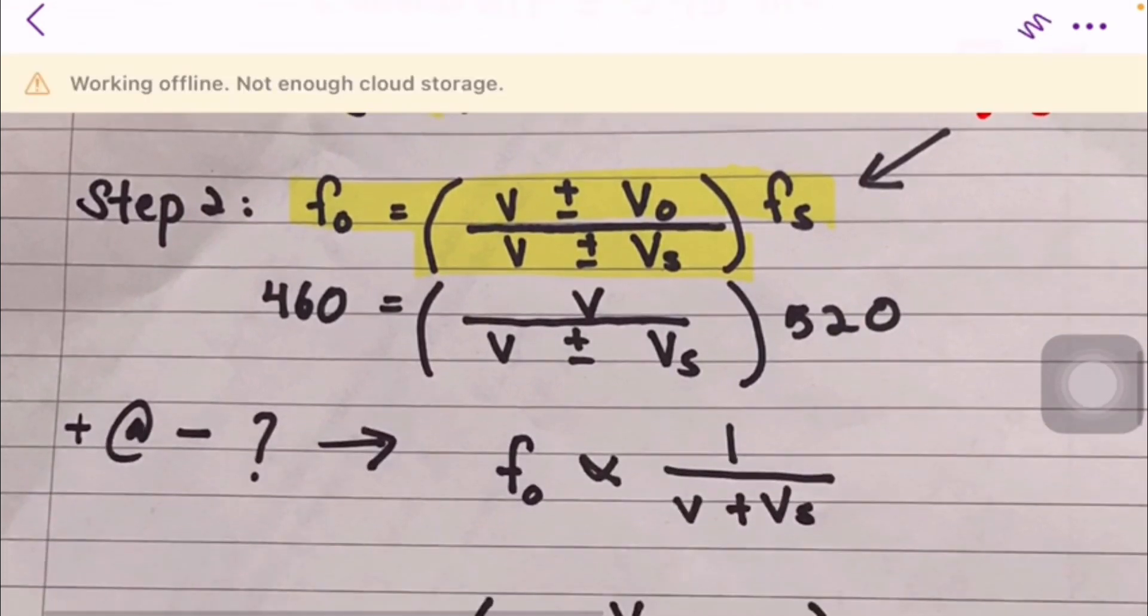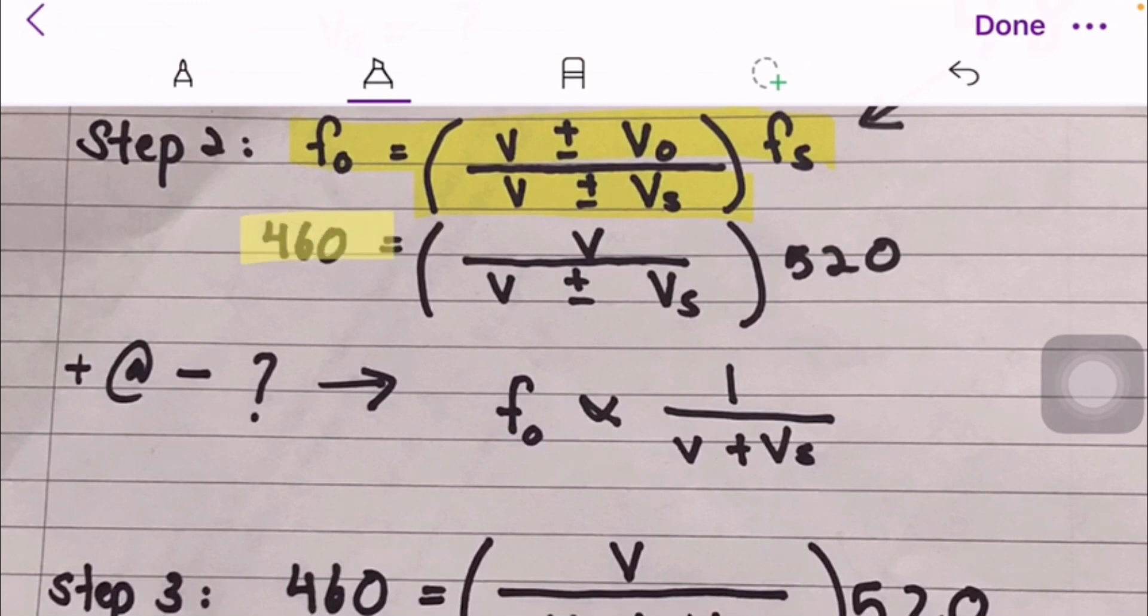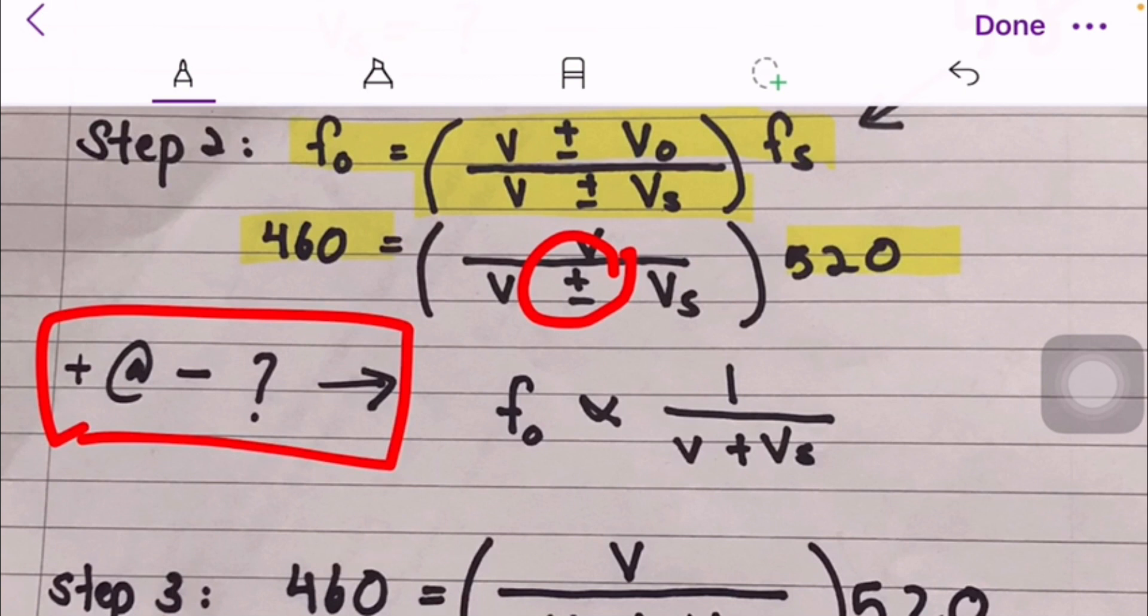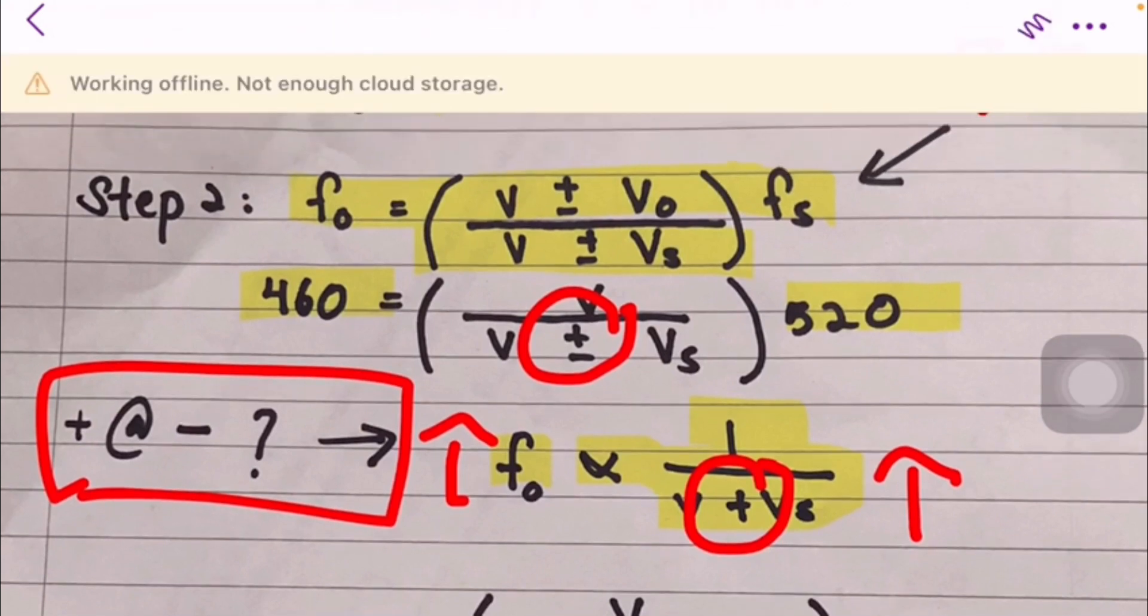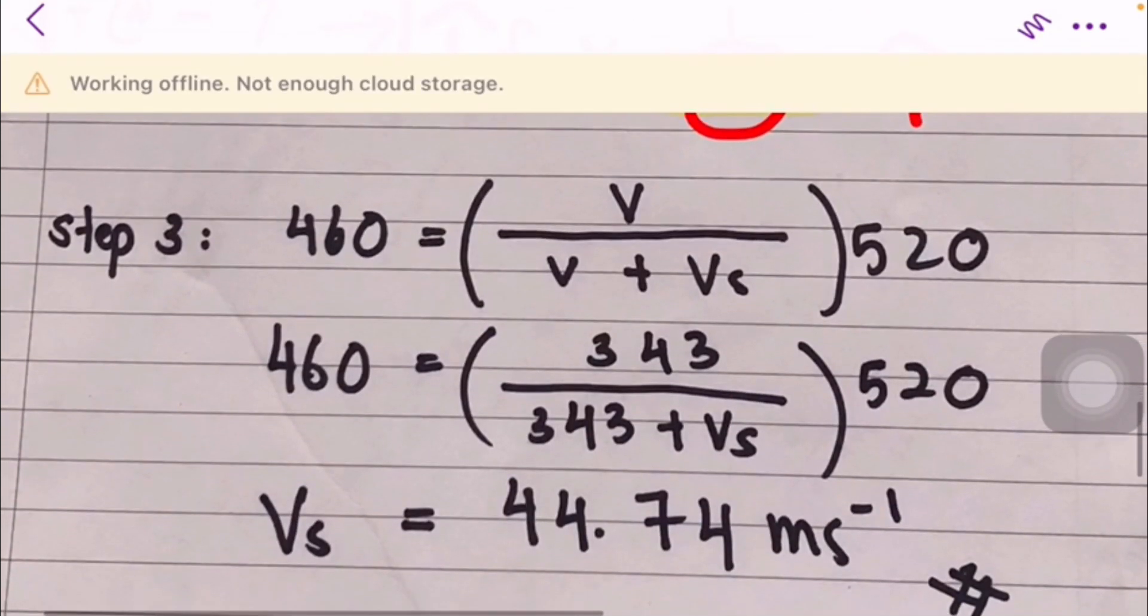We need to determine the plus or minus. If we look at it, fo is directly proportional to one over v plus vs. If directly proportional, when this increases, this also increases, so the symbol is plus.